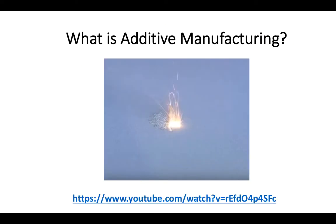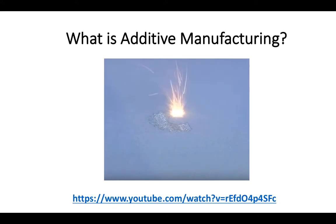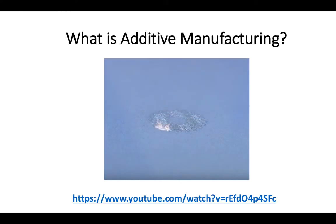As a refresh, additive manufacturing is a family of manufacturing processes where parts are 3D printed from CAD files layer by layer. The PAMScare project is focused on the additive manufacturing of metal parts, mainly selective laser melting. In this process, a laser source melts one layer of powdered material at a time to build up the part.